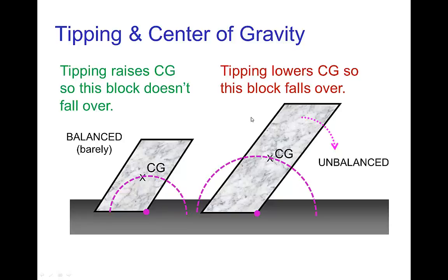Now the second object on the right, its center of gravity is higher and it's positioned here compared to the location of the edge where it would tip. And now we see that it's going to naturally tip over. It's out of balance because the center of gravity can just immediately start to go down. And so that's what it does.